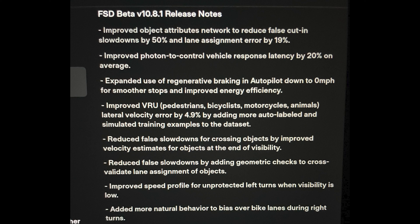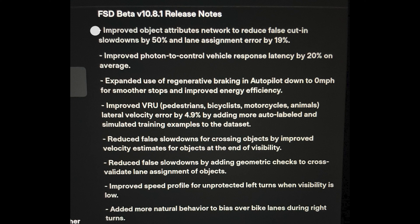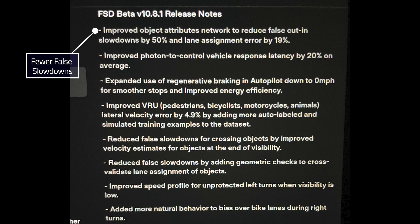Let's start with 10.8. Basically the headlines were that they were improving faster reflexes. One of the release notes was improved photon-to-control vehicle response latency by 20% on average — from the moment that light hits the camera sensor to the moment the car does something in response. They also improved their object attributes network, which when it sees something, it applies attributes like speed and relative location. They improved that network to reduce false cut-in slowdowns by 50% and lane assignment errors by 19%. The big one in my opinion is the false cut-in errors — prior to 8.1, if you'd seen a vehicle off in the distance just approach the road, the car would stop prematurely, which was uncomfortable especially in traffic.